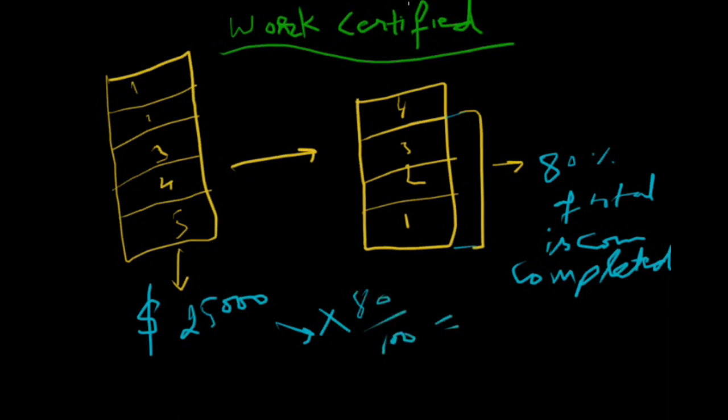On this work certified basis, the contractor will get 80% of $25,000, which is $20,000.